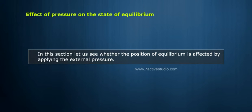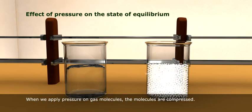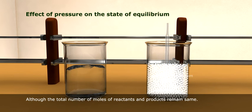In this section, let us see whether the position of equilibrium is affected by applying external pressure. Take an example of reversible reaction 2NO2 reddish brown is reversible with N2O4 colorless. When we apply pressure on gas molecules, the molecules are compressed, although the total number of moles of reactants and products remain same.